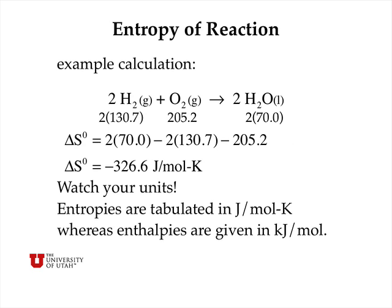For the reaction of hydrogen and oxygen to produce water, we take the entropies of two moles of liquid water — using stoichiometric coefficients as before — and subtract the entropy of oxygen gas and twice the molar entropy of hydrogen gas to get an overall delta S for the reaction of minus 326.6 joules per mole per kelvin. Watch your units: entropies are usually tabulated in joules per mole per kelvin, but enthalpies are given in kilojoules per mole, so a conversion may be needed.